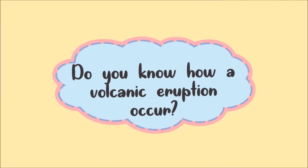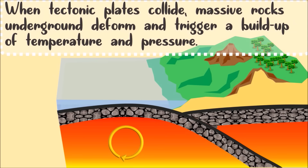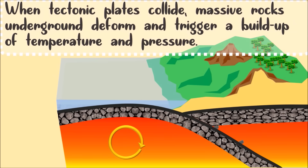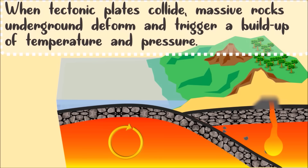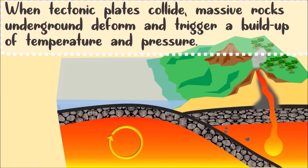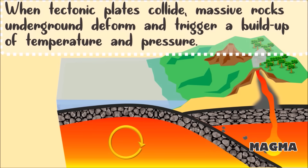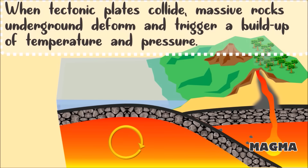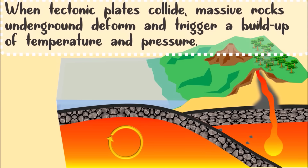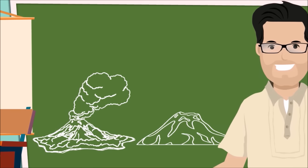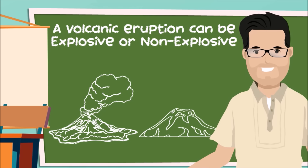Do you know how a volcanic eruption occurs? When the tectonic plates collide, massive rocks underground deform and trigger a buildup of temperature and pressure. The high temperature and pressure results in melting of rocks and they become magma. When pressure builds up, magma rises to the surface and volcanoes erupt to release the pressure with lava and other gaseous materials. Some volcanic eruptions are explosive and others are actually not.